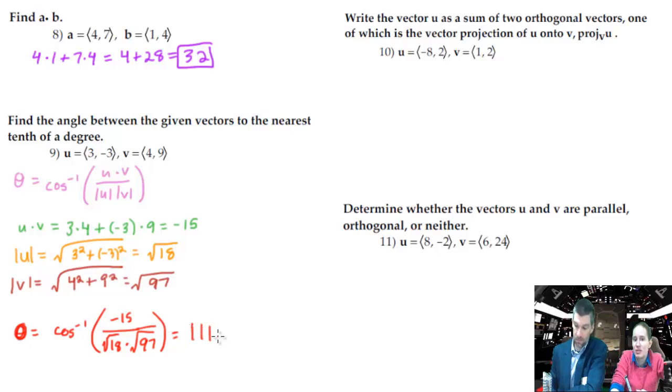I got 111.038. That's good. That's what it's supposed to be. We want the nearest tenth of a degree. So, 111.0. Cool beans.